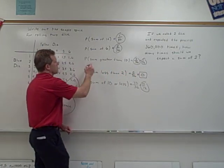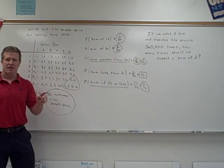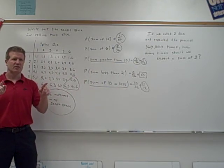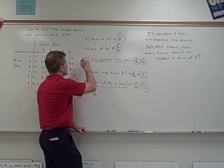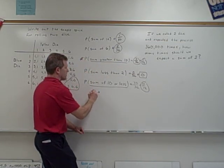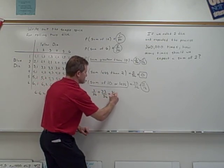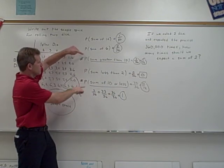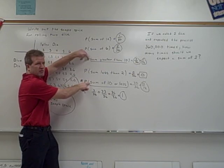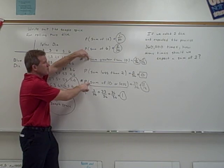These two events, getting a sum greater than 10 and getting a sum of 10 or less, there's a special name for events whose probabilities add up to one. Because this is three out of 36 for this probability, plus 33 out of 36 for this probability. That adds up to 36 out of 36, which equals one. When the two probabilities add up to one, what do we call these two events? Complementary. Complementary. Yep.